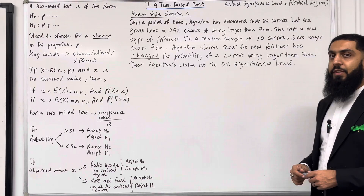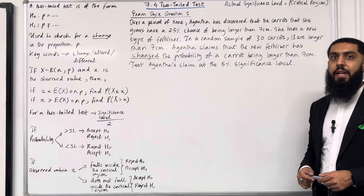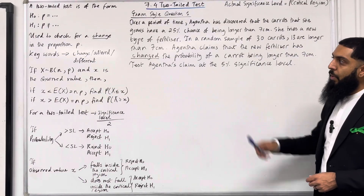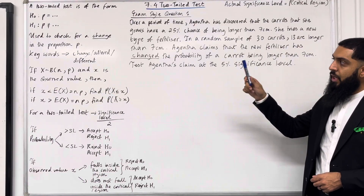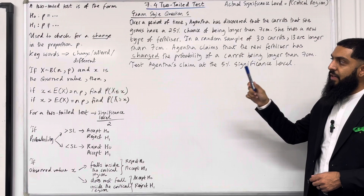Some of the keywords that you need to look out for in order to identify a two-tailed test include: number one, change; number two, altered; number three, different.